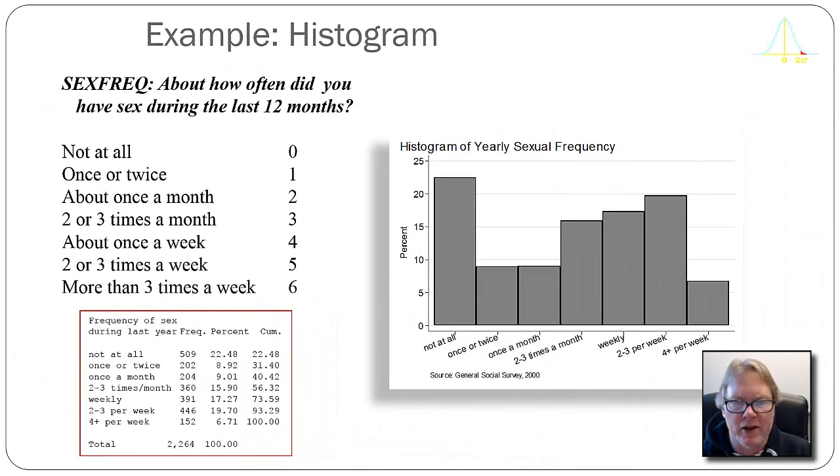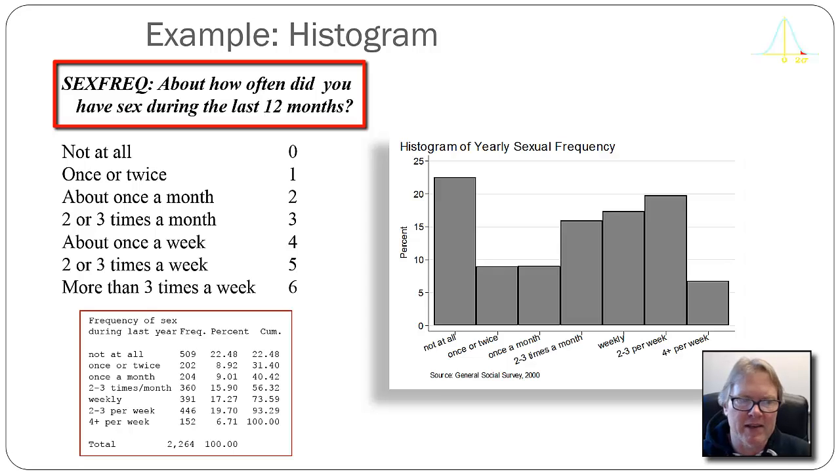Well, here's another variable from the General Social Survey. It's an interesting variable because it kind of falls in between being a continuous variable or quantitative variable and a discrete orderable. The variable is called sexfreq, S-E-X-F-R-E-Q, and the question was asked to GSS respondents about how often did you have sex during the last 12 months.